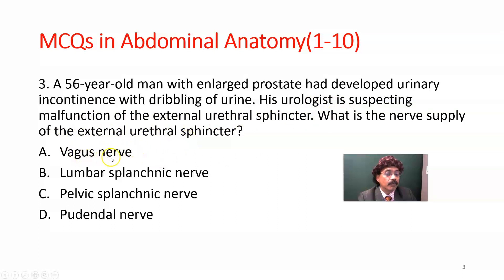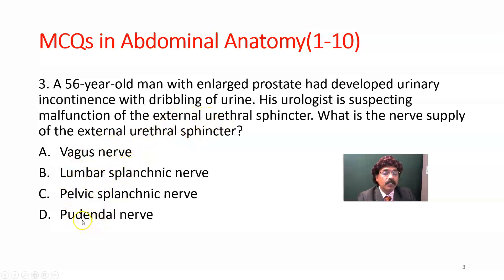Options: vagus nerve, lumbar splanchnic nerve, pelvic splanchnic nerve, or pudendal nerve. Since the external urethral sphincter is a voluntary muscle, it is innervated by the perineal branch of the pudendal nerve. D — pudendal nerve — is the answer.